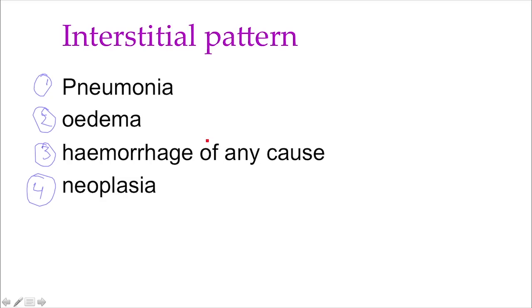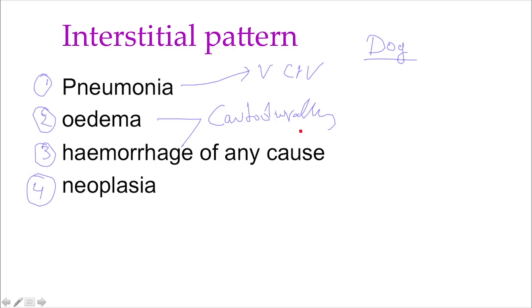In the dog only — not in the cat — pneumonia tends to be cranioventral, while edema and hemorrhage are usually caudodorsal. Neoplasia can be anywhere. Knowing this gives you an idea of what is most likely and what is least likely.